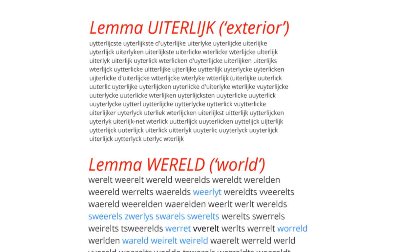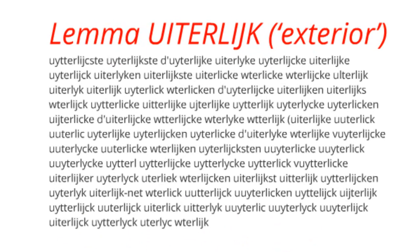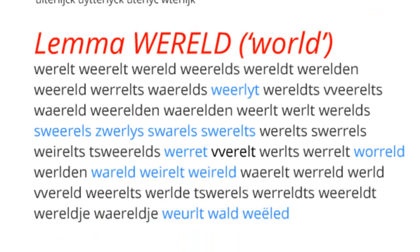This example also makes clear that for longer words, it is not realistic to list all variants extensively in the lexicon with reasonable effort. Accounting for the variants in terms of orthographical rules is less obvious for the second example. Many variants are largely unpredictable and can only be dealt with by listing them in the lexicon.